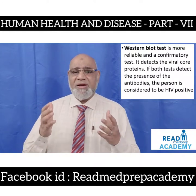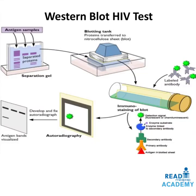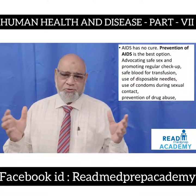In the Western Blot HIV test, antigen samples are taken from the patient, and proteins are separated by separation gel. The blotting tank transfers proteins to a nitrocellulose sheet, and labeled antibodies are introduced causing immunostaining of the blot. The antigen on the labeled sheet combines with the primary antibody, which then combines with the secondary antibody. Detection is performed by fluorescence or chemiluminescence through autoradiography, resulting in the formation of antigen bands which are visualized. AIDS has no cure, so prevention is the best option.